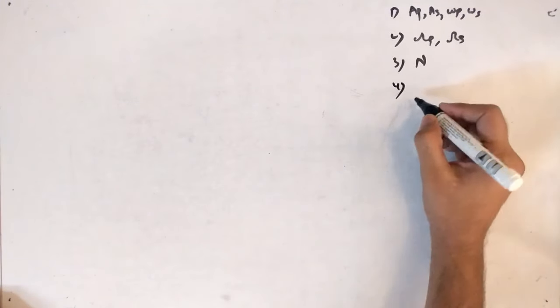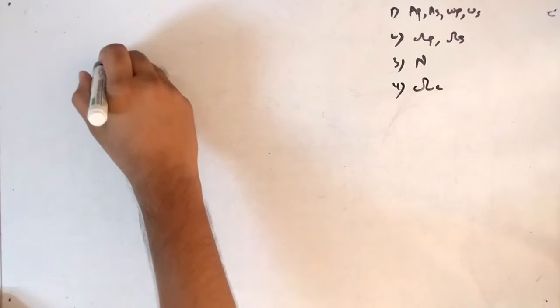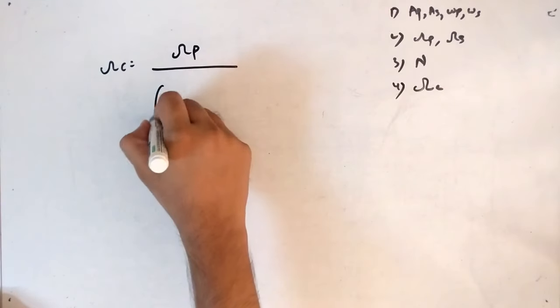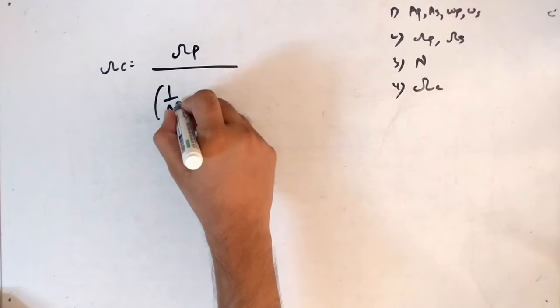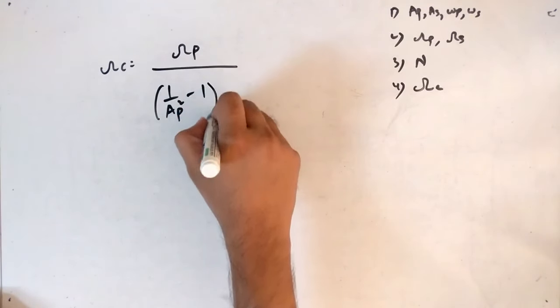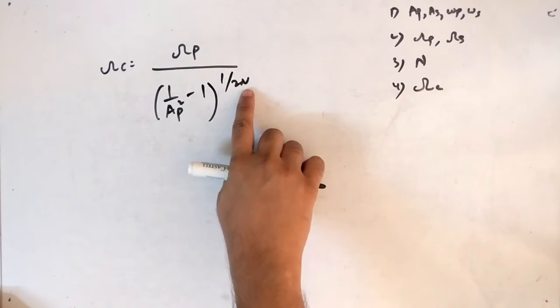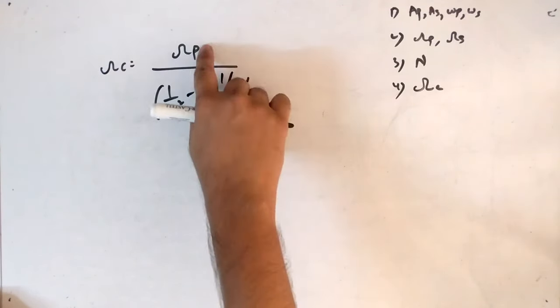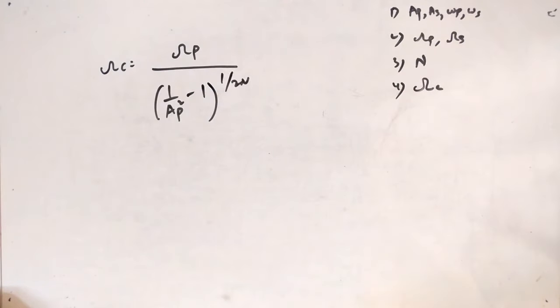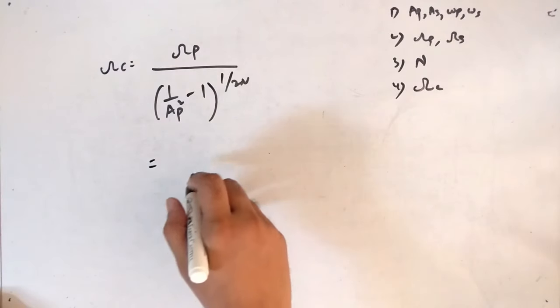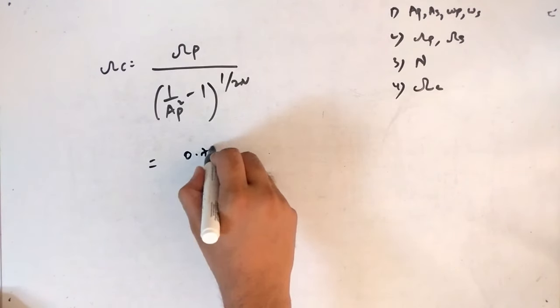The fourth point is to find the cutoff frequency. The formula is: Ωc = Ωp / [(1/Ap² − 1)^(1/2n)]. Substituting the values from the previous steps, the cutoff frequency Ωc = 0.75.